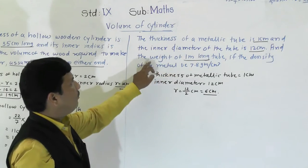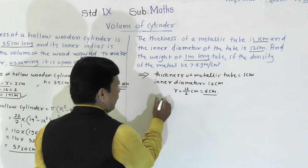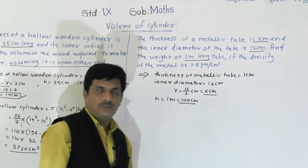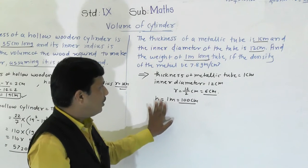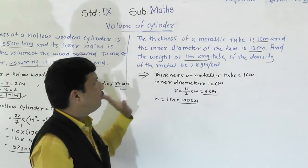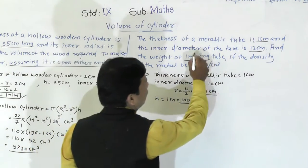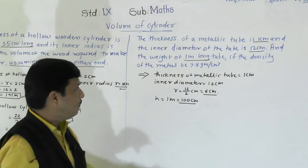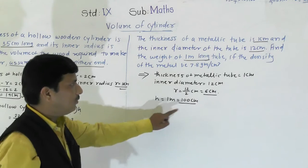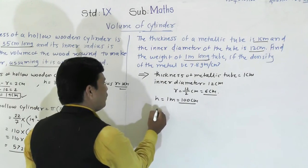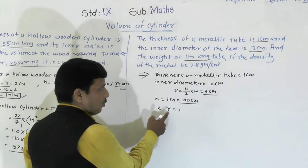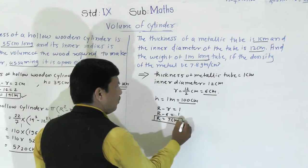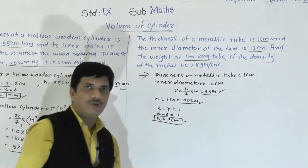The height is 1 metre = 100 cm. We convert to centimetres because all other dimensions are in centimetres. We have height and inner radius. We need to find the volume. Since thickness = R - r = 1 and r = 6, we get R = 7 cm. Now we have capital R = 7 cm, small r = 6 cm, and height = 100 cm.